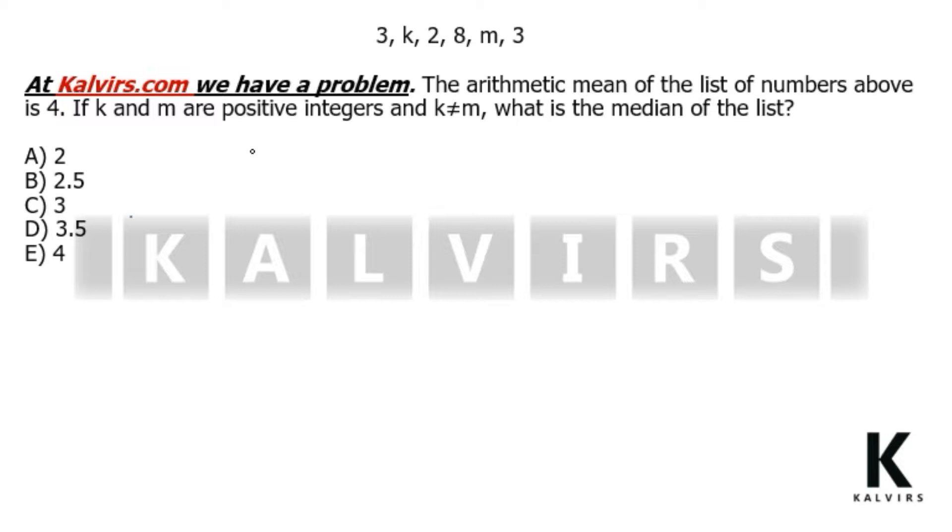Let's begin. The arithmetic mean of these numbers is 3 plus k plus 2 plus 8 plus m plus 3, and this all over 6, which is the amount of numbers. And this is equal to, according to the problem, equal to 4.